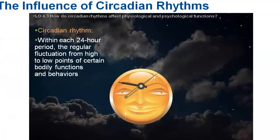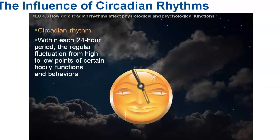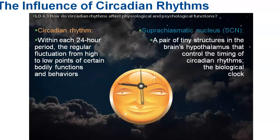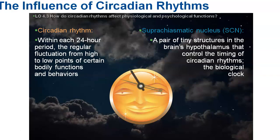Another thing you'll need to remember is your circadian rhythm — that's the daily, regular fluctuation we have, a pattern of fluctuation within roughly 24 hours. It's also known as your biological clock. Another thing to remember is what controls your sleep-wake cycle, which is part of your circadian rhythm. That part of your brain is the suprachiasmatic nucleus, or the SCN, which helps control your circadian rhythm and the sleep-wake cycle.